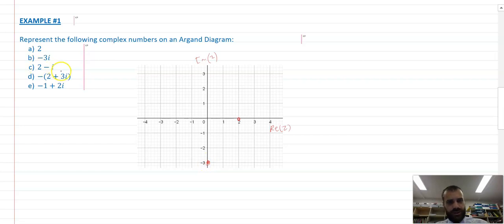Two minus i. Negative two plus three i. So that's the same as two plus three i, but it's multiplied by negative one.